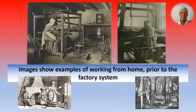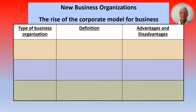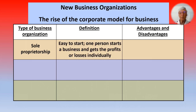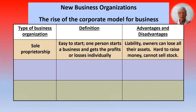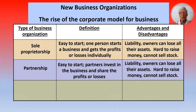Factories displaced traditional artisans. Here we see examples of working from home prior to the factory system. The factories that were developed were large, dirty, miserable facilities with no concern at all for individual workers' welfare. New business organizations emerged during this time — this was the rise of the corporate model for business. There had always been sole proprietorships: easy to start, one person gets the profits or losses individually, with liability meaning they could lose all their assets, and it's hard to raise money and they can't sell stock. Then there are partnerships: easy to start, partners invest and share profits or losses, but again there's liability and they can't sell stock.